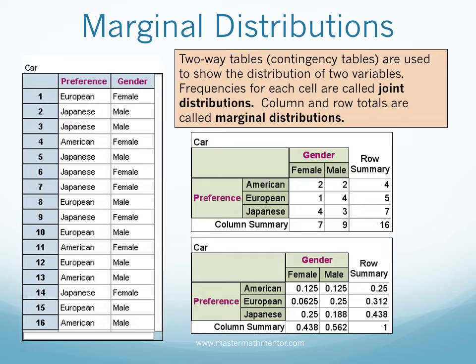The two-way table can also be viewed in terms of percentages. Each joint distribution is divided by n, the number of data — in this case 16. Marginal frequencies are computed the same way. In the percentage two-way table, the sum of the rows and sum of the columns will always be 100 percent.